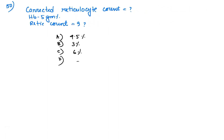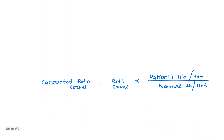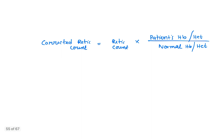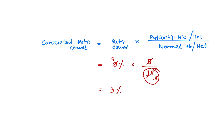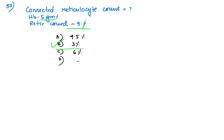Question number 50: calculate the corrected reticulocyte count given retic count 9% and hemoglobin 5 g/dL. The formula is: corrected reticulocyte count = retic count × (patient hemoglobin / normal hemoglobin). Taking normal hemoglobin as 15 g/dL: 9 × (5/15) = 9 × 1/3 = 3%. So the corrected reticulocyte count is 3%.